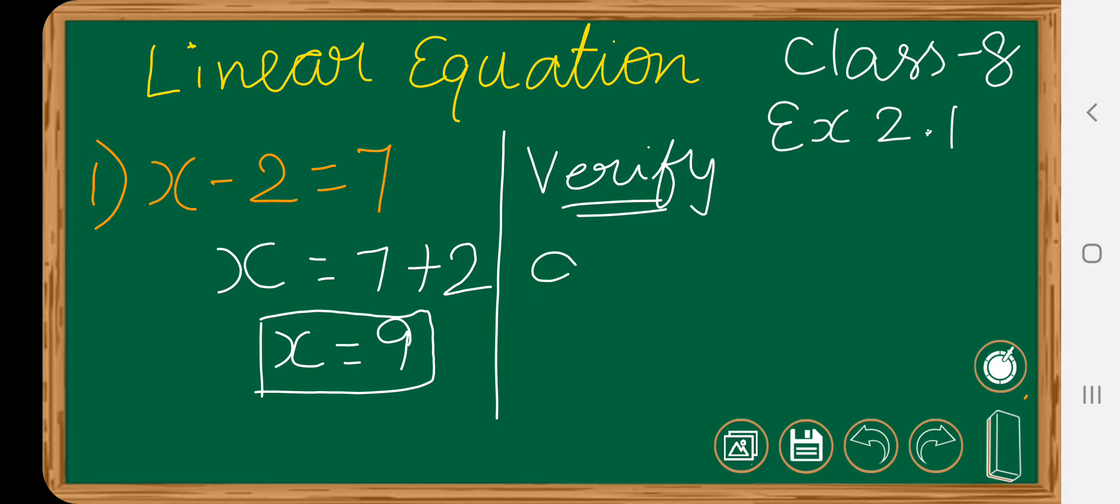9 minus 2 is 7, so 7 equals to 7. Our LHS equals to RHS. LHS means left hand side is equals to right hand side.